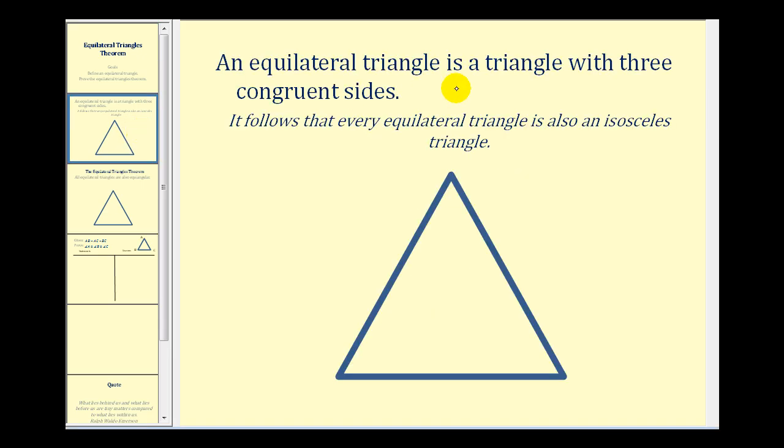An equilateral triangle is a triangle with three congruent sides. So if each side of the triangle has one hash mark, we know that the three sides are congruent. And we should recognize that every equilateral triangle is also an isosceles triangle. Remember an isosceles triangle has at least two congruent sides.